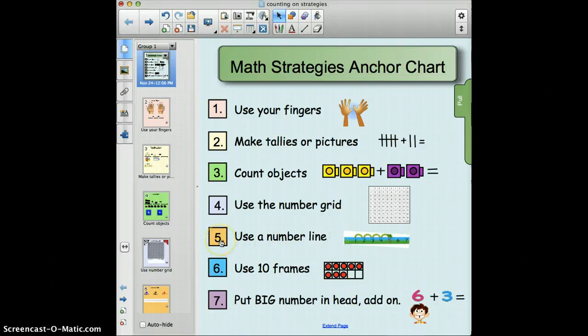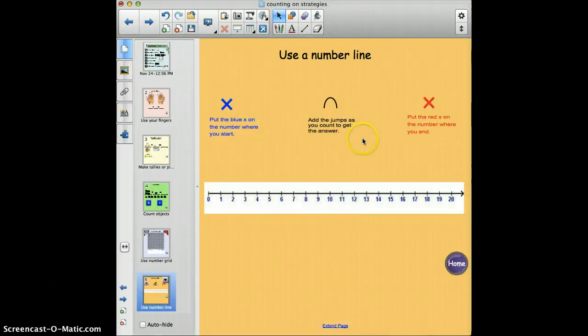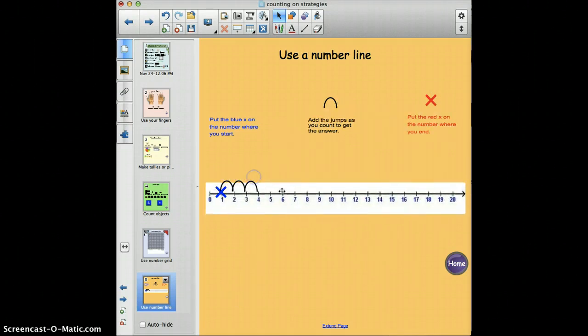Next is the number line. With this number line I created a slide for them to put the blue marker on where they start. Maybe they start at one, and then they want to frog jump three more. These little jumps actually do that - one, two, three - and they end on four. So then you can take the red X and put it on four. Again, they can use partners for this and create their own number problems for their partner.